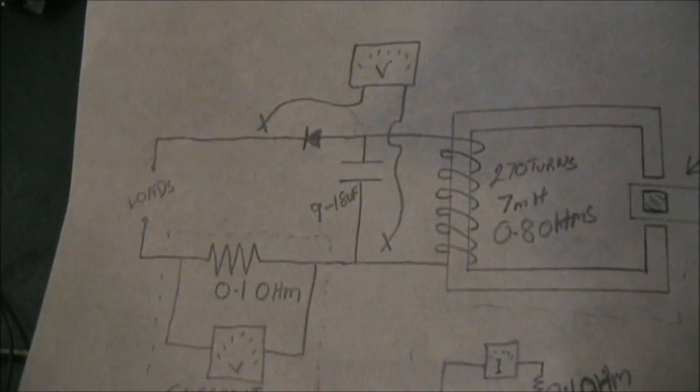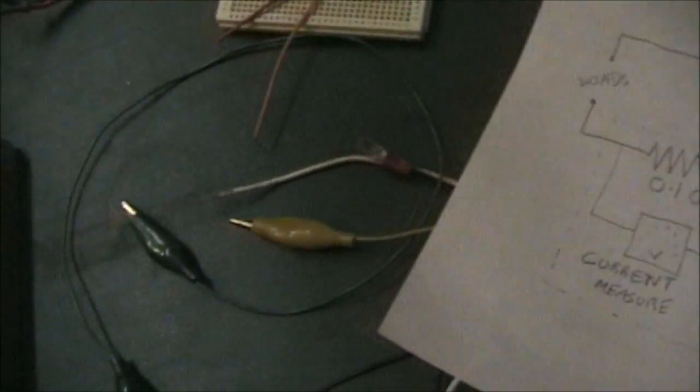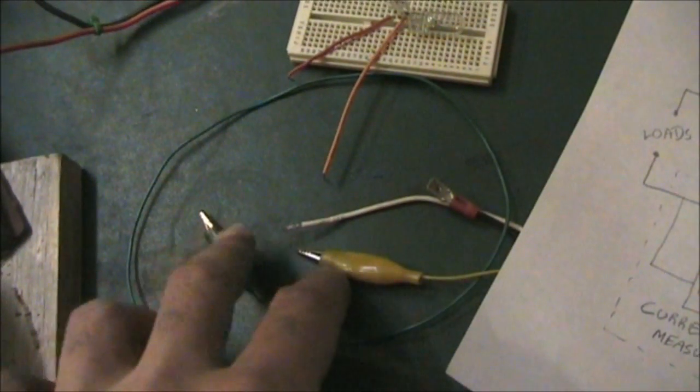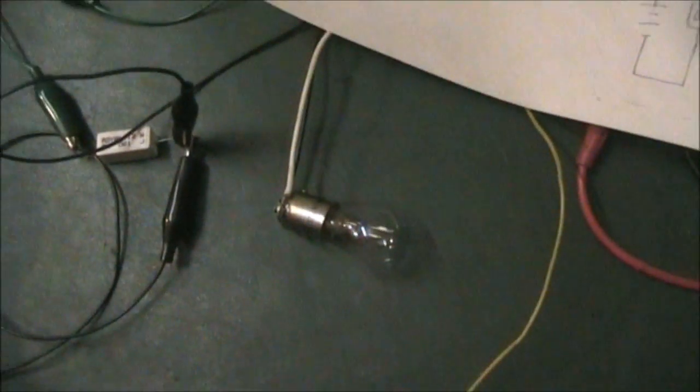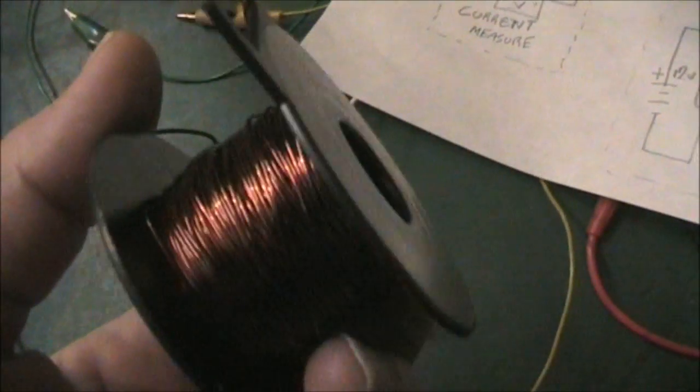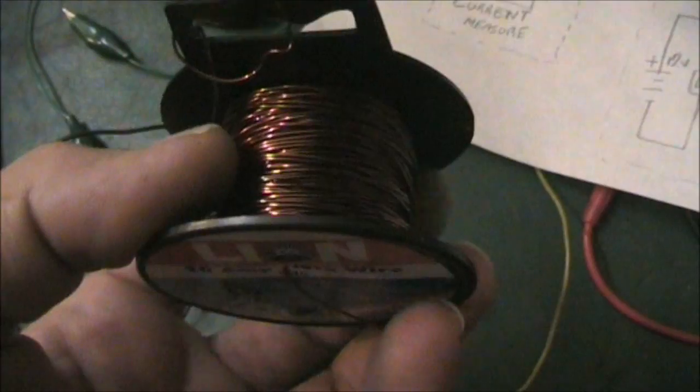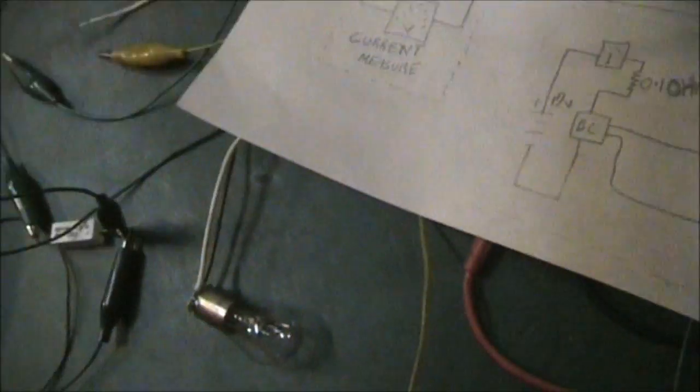That point in the circuit there. I'll then connect the load across these clips. The wire I used for the coil was also the wire out of the universal motor field. I only used one quarter of the wire for that one coil.